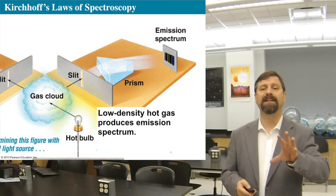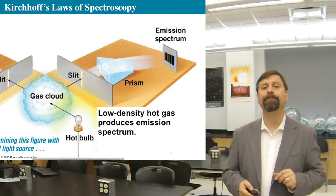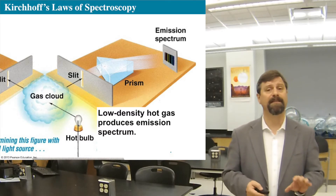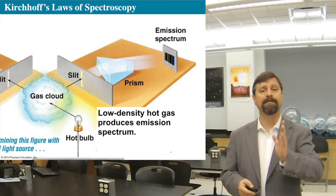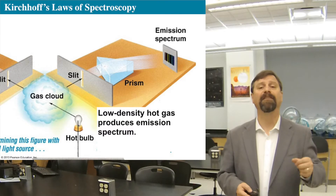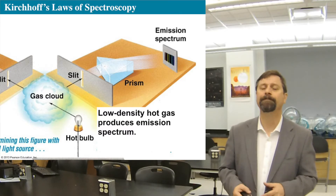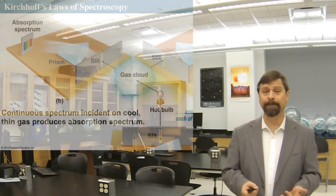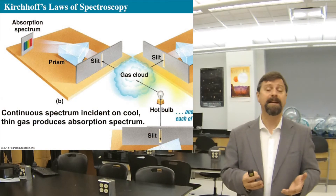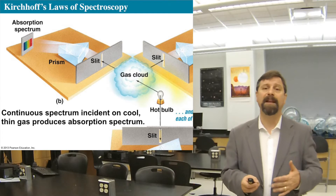You get specific wavelengths appearing at specific brightness from that hot gas — that is one of Kirchhoff's laws of spectroscopy. The next law: if you take a continuous source like an incandescent light bulb, which gives a black-body type of radiation, and that is behind a cool gas...